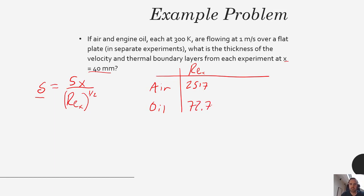These are very different Reynolds numbers, but both represent laminar flow. Unlike the critical Reynolds number for flow through a pipe — where transition from laminar to turbulent occurs at approximately 2,000 — when you have flow over a flat plate, that critical Reynolds number is actually 100,000. So we're still very laminar for both of these, meaning this solution is still valid.